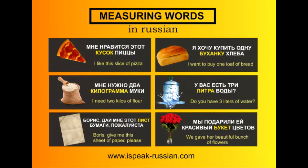Now let me read these examples once again — you follow along and can repeat after me. Мне нравится этот кусок пиццы. Я хочу купить одну буханку хлеба. Мне нужно два килограмма муки. У вас есть три литра воды? Борис, дай мне этот лист бумаги, пожалуйста. Мы подарили ей красивый букет цветов.